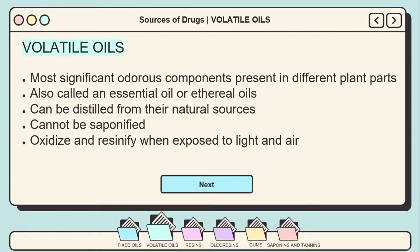Volatile oils cannot be saponified with alkali as fixed oils can. Volatile oils do not go rancid like fixed oils do; instead they oxidize and resinify when exposed to light and air.